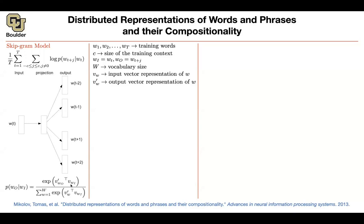A student asks about visualization: how big is the dimensionality used in industry? That depends on your corpus size — the more words in your corpus, the larger you can set the dimensionality of your vector representations. It could be 100, 256, 1024, and you can double it each time. Recently people are using around 1024, but it can get bigger depending on corpus size.